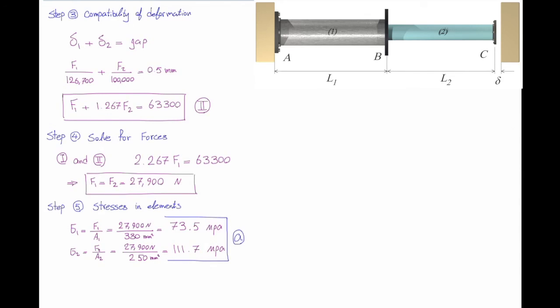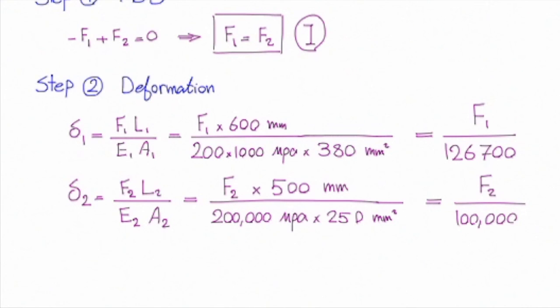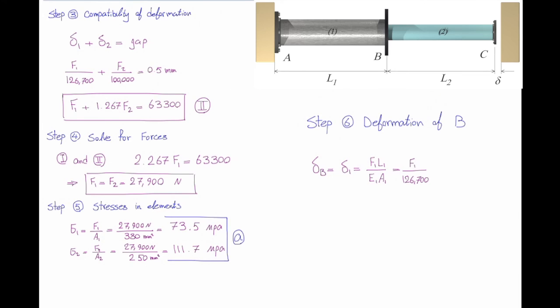And the last part is how much is the movement of flange B? How much does this flange move? What connects flange B to support A? Element number 1. So the movement of that flange would be equal to the change in the length of that element, element number 1. So I will say delta B is equal to delta 1. Delta 1 is FL over EA. I don't need to plug all these values because we have determined delta 1. Delta 1 is F1 divided by 126,700. I rewrite it in this way and plug F1. And that gives me 0.22 millimeters.